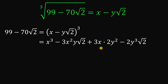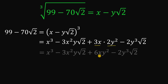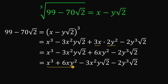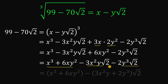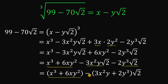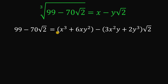Let's focus on this result and simplify a little bit. 3x times 2y squared gives us 6xy². We then rearrange terms: we separate the part that doesn't have a factor of square root of 2 — which is (x³ + 6xy²) — and the part that does have a factor of square root of 2. Comparing left-hand side and right-hand side, since 99 has no square root of 2, we get: x³ + 6xy² = 99.